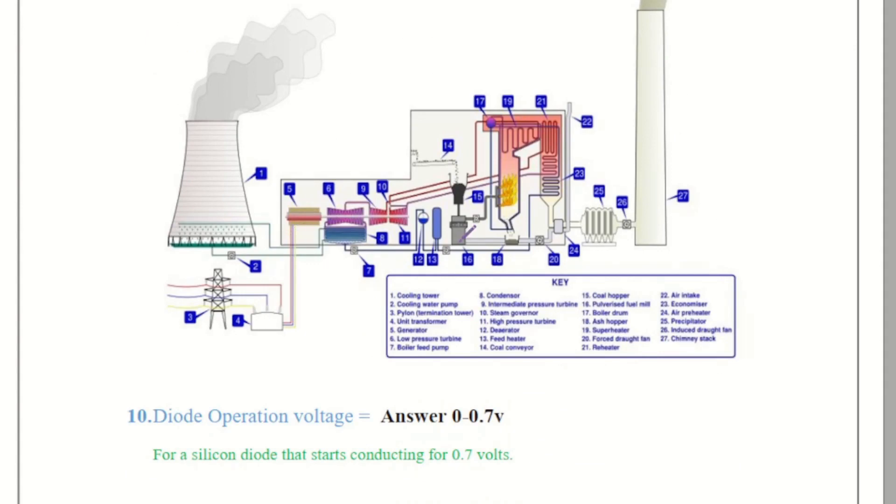Question number 10. Going to ask diode operation voltage and that is obvious 0.7 voltage for the silicon diode that starts conducting from 0.7 volts to onwards that will increase. So that's all for our today's video.